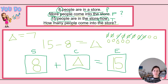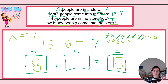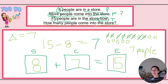15 minus 8 equals 7. My change is 7. 8 plus 7 equals 15. How many people come into the store? 7 people. How did this look compared to the work that you did? Were you close? Did you get it correct? Did you get lost? That's okay — that's why we practice.